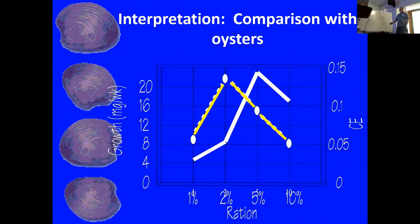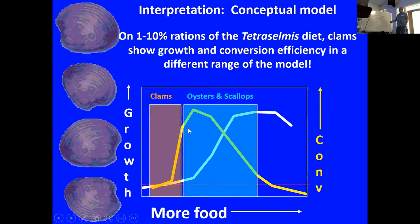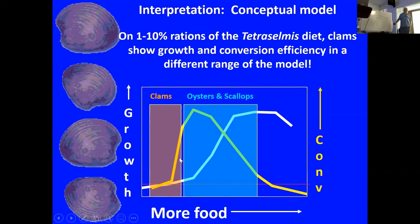Contrasting that with bay scallops and oysters again, here's the comparison. From your standpoint as clam farmers, this tells you something about your expectations. Where you would have a compromise, it's going to require a lot more food — more than the 10% of live weight in dry matter feed per day that gets you high conversion efficiency and low growth relative to clams and oysters. You're going to have to feed a whole lot more to top out your growth, and I haven't done that experiment yet to find out how much you need to feed to max growth. It's more than 10%.